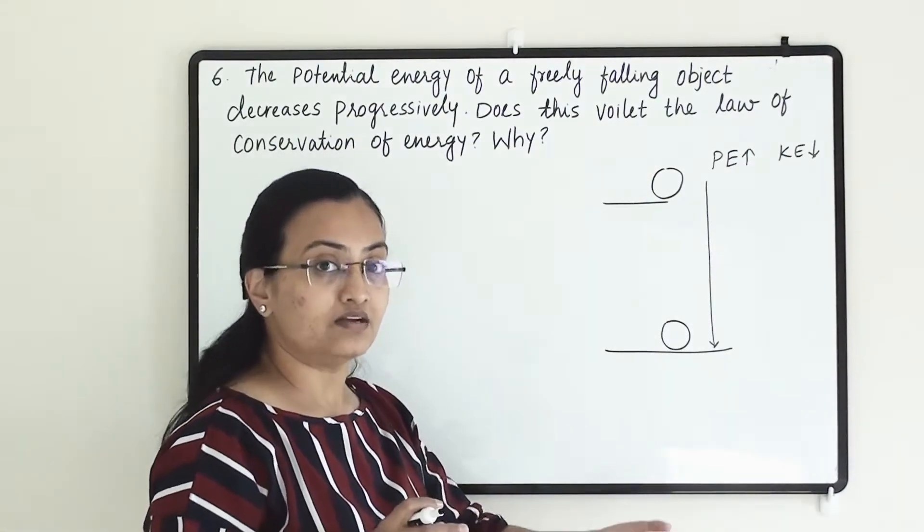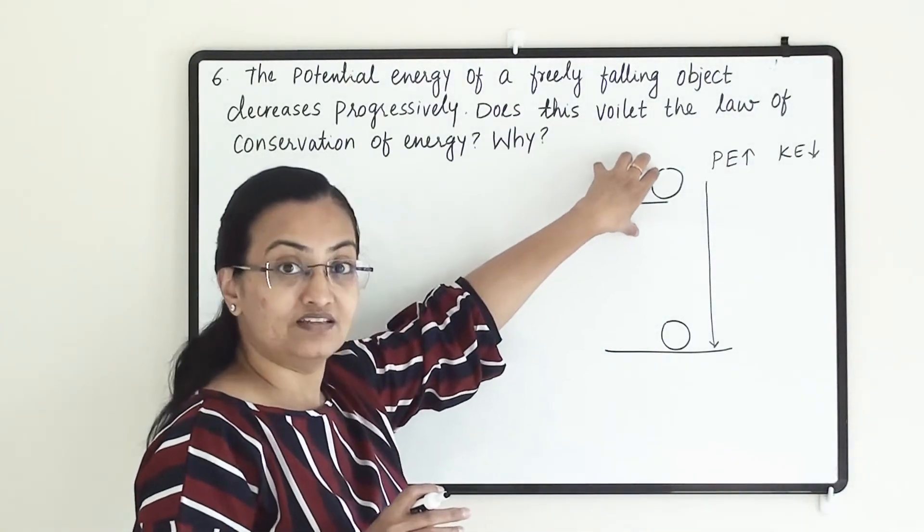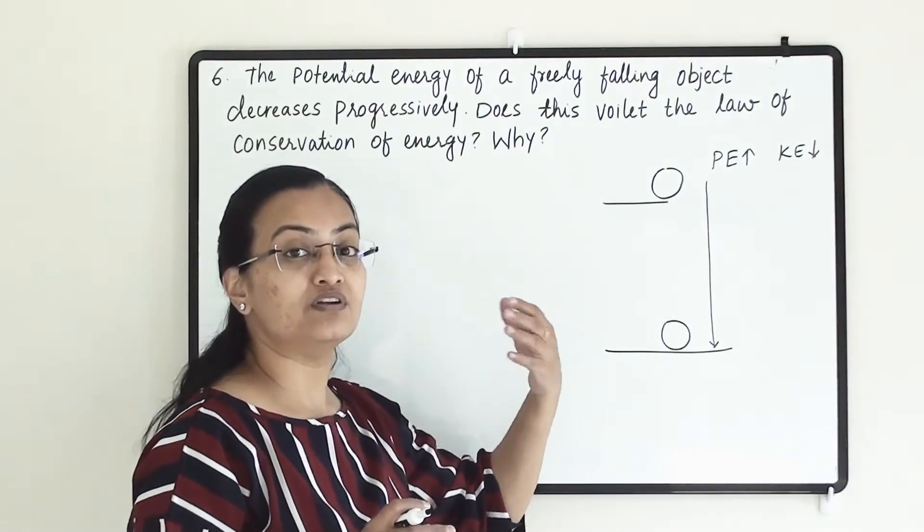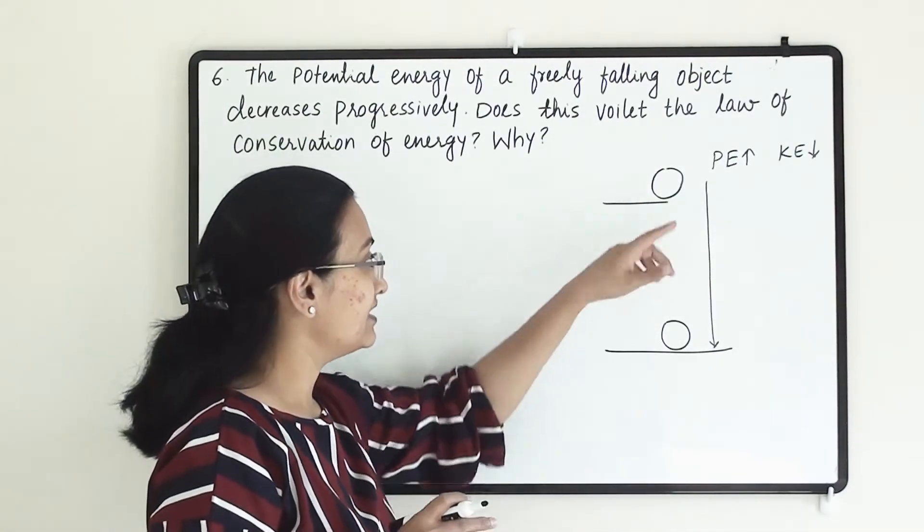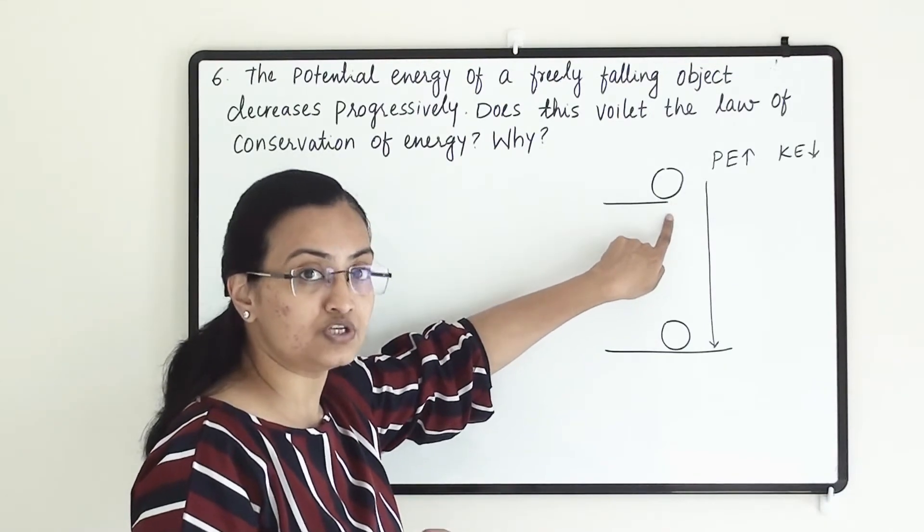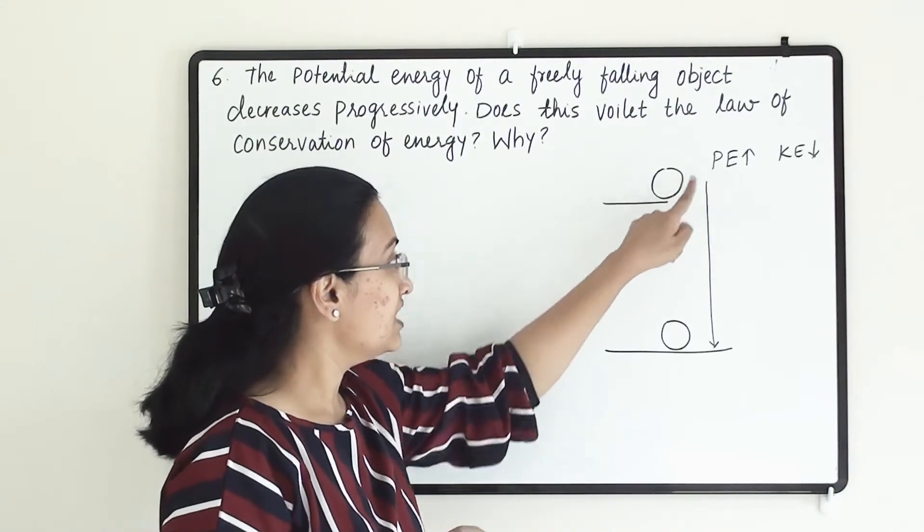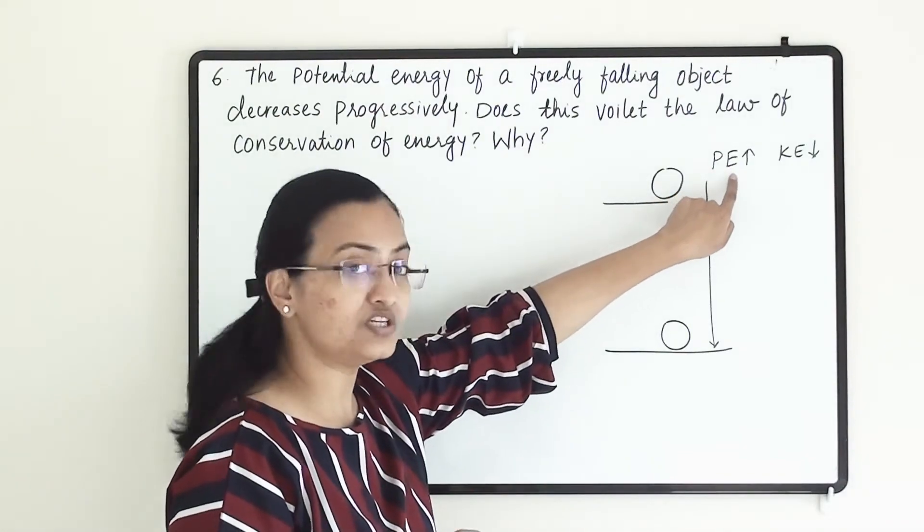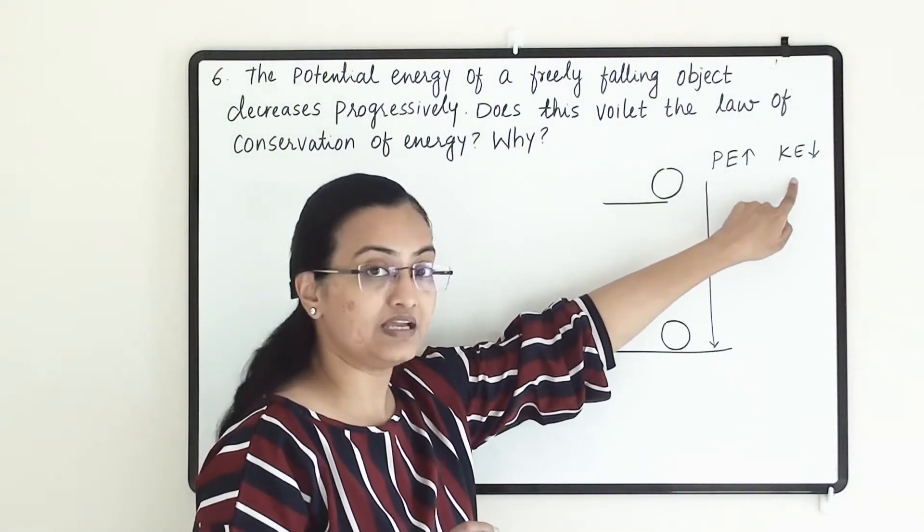When we take this ball and keep it at this position, we do some work on it, and the ball gains energy. This energy is due to its position, which is potential energy. At this point, potential energy is maximum and kinetic energy is minimum.